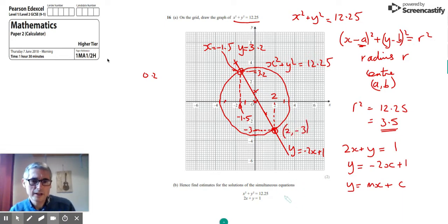So there are two pairs of solutions. We need to state them as coordinates. Solutions to this are the first pair negative 1.5, 3.2, and the second solution is 2, negative 3.